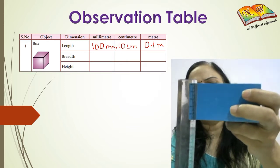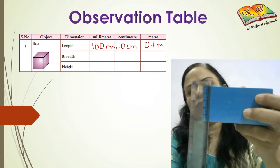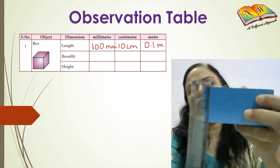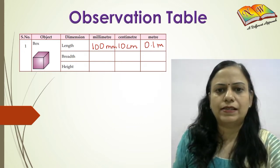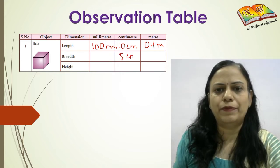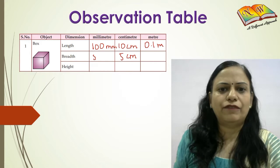The length was 10 and now the breadth is 5. This is corresponding to 5 on the scale, so 5 centimeters is the breadth, and we multiply it by 10, that makes it 50 millimeters.